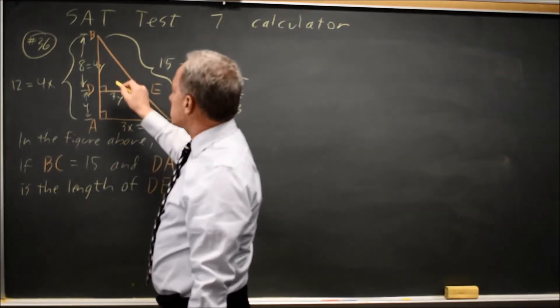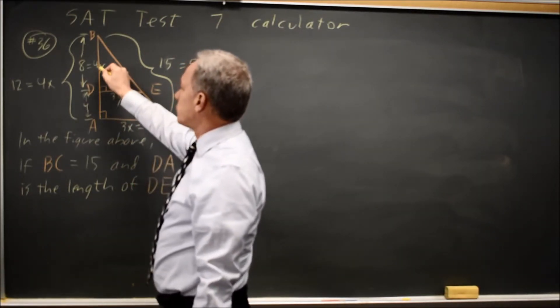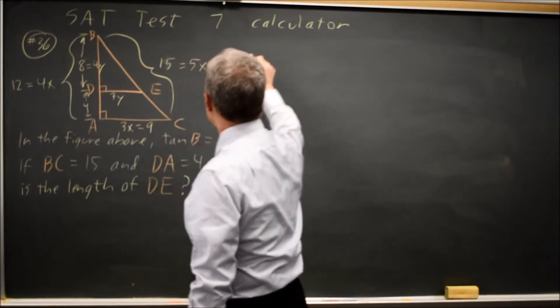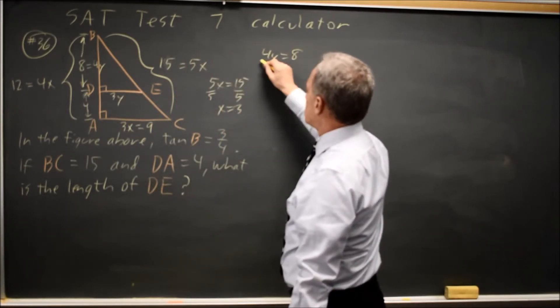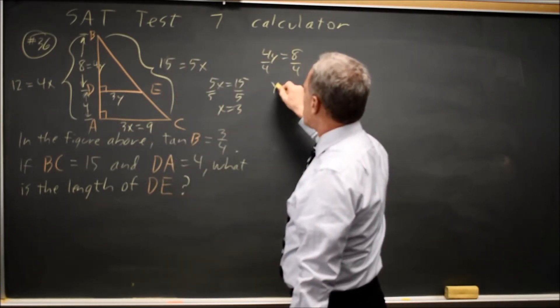So, there is ratio 3Y to 4Y, where 4Y equals 8. Divided by 4, Y equals 2.